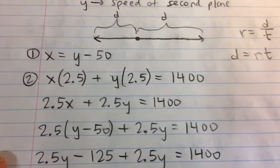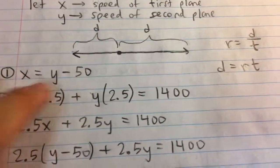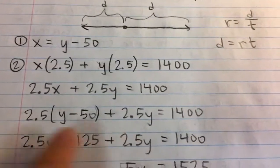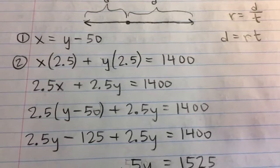Next, what we can do is we can replace or substitute in x for y minus 50 because they are equal. So if we plug that in, now we have an equation just in y and we know if we have an equation with just one variable, we can solve it.